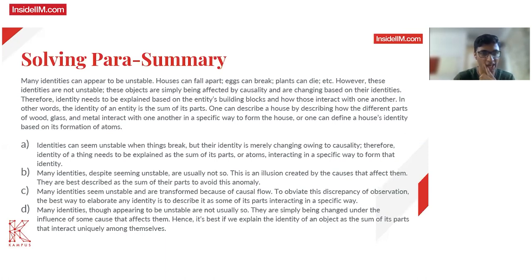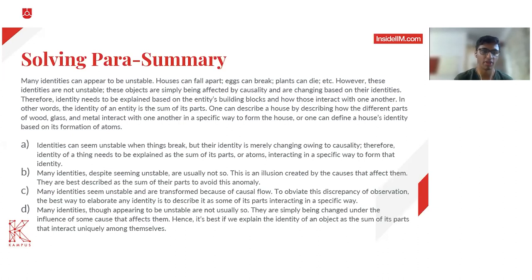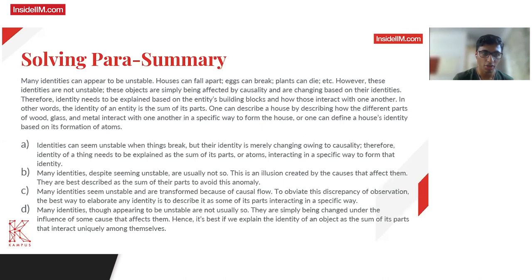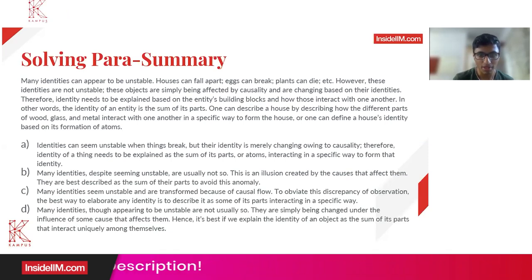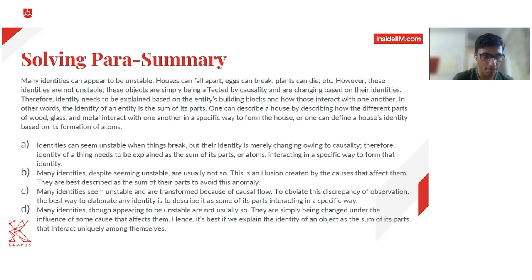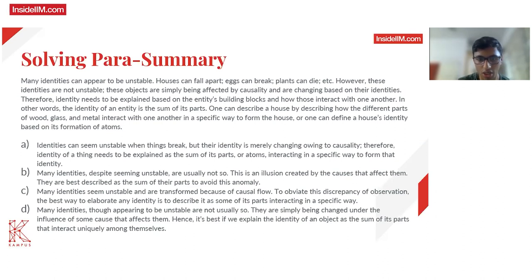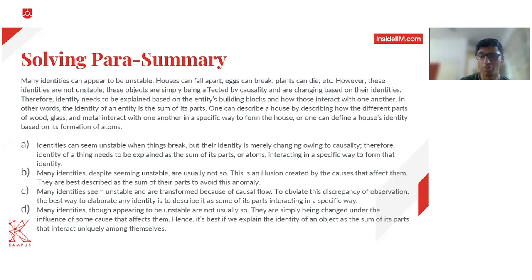Moving to the first option: 'Identities can seem unstable when things break, but their identity is merely changing due to causality. Therefore, identity of a thing needs to be explained as the sum of its parts or atoms interacting in a specific way to form that identity.' This makes sense, so we'll keep it. Option B: 'Many identities, despite seeming unstable, are usually not so. This is an illusion created by the causes that affect them. They are best described as the sum of their parts to avoid this anomaly.' This is a confusing option so we'll keep it for now.